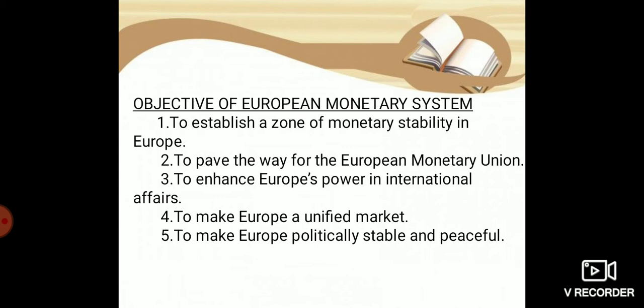The fourth objective is to make Europe a unified market — the main aim being to integrate European markets into a single unified market. The fifth and final objective is to make Europe politically stable and peaceful. If fluctuation rates increase or decrease, it affects politics and destroys peacefulness; therefore, political stability and peace are a core aim of the European Monetary System.